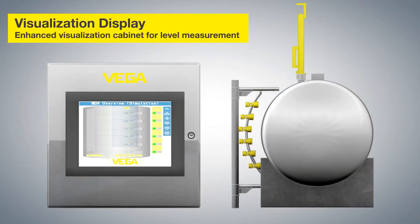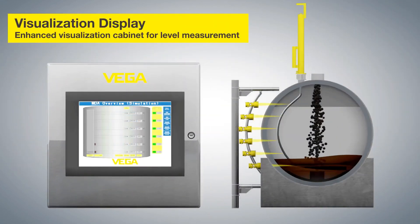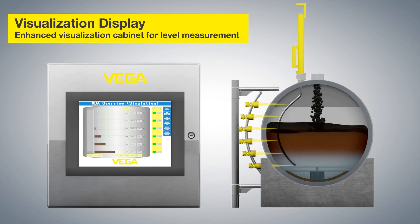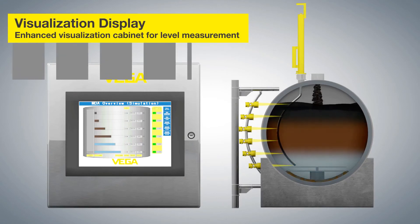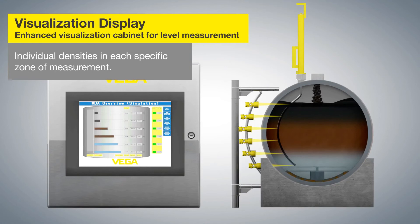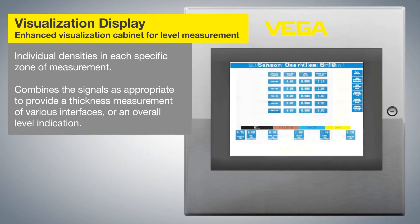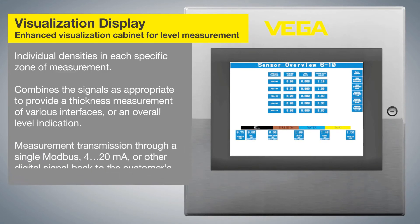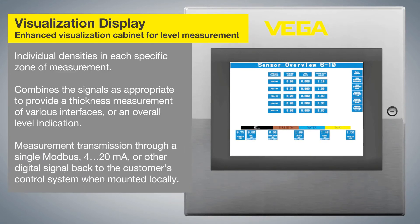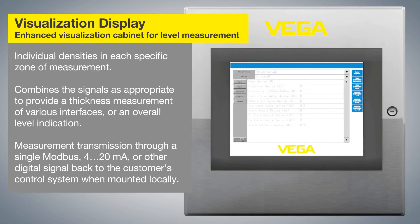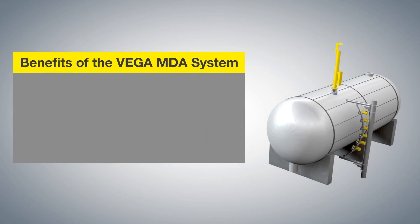Visualization Display: An enhanced visualization cabinet for level measurement displays individual densities in each specific zone of measurement. It combines the signals as appropriate to provide a thickness measurement of various interfaces, or an overall level indication. Measurement transmission occurs through a single Modbus, 4 to 20 mA, or other digital signal back to the customer's control system when mounted locally.